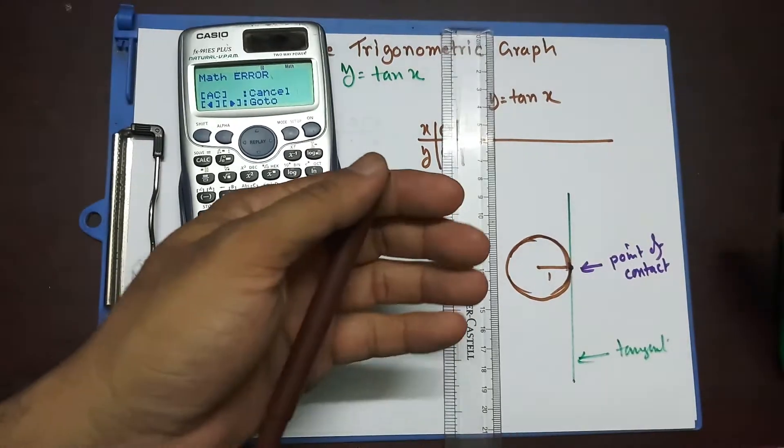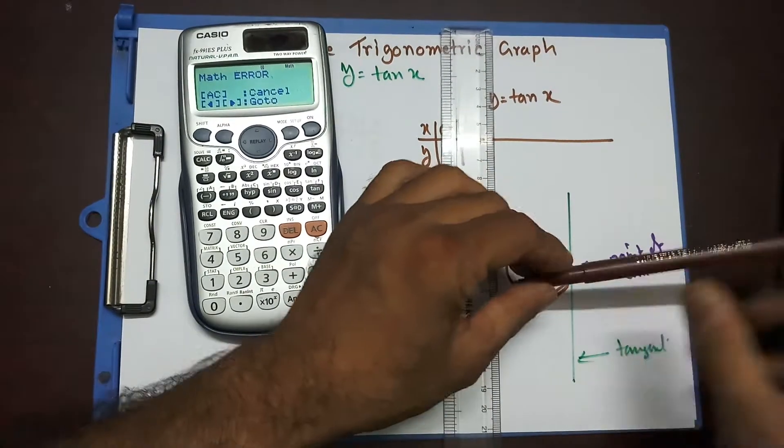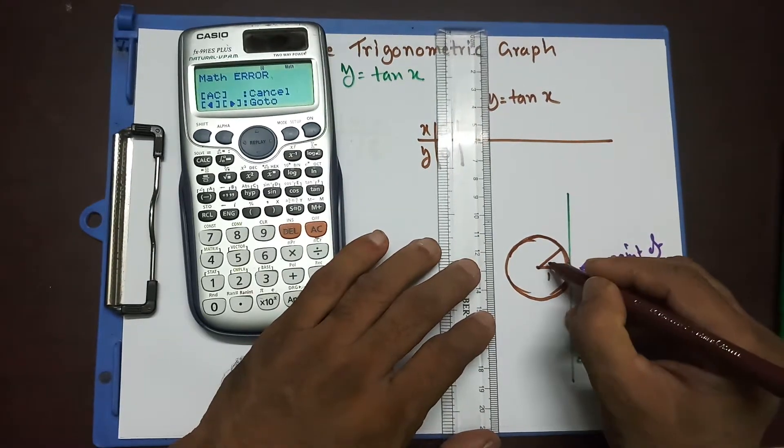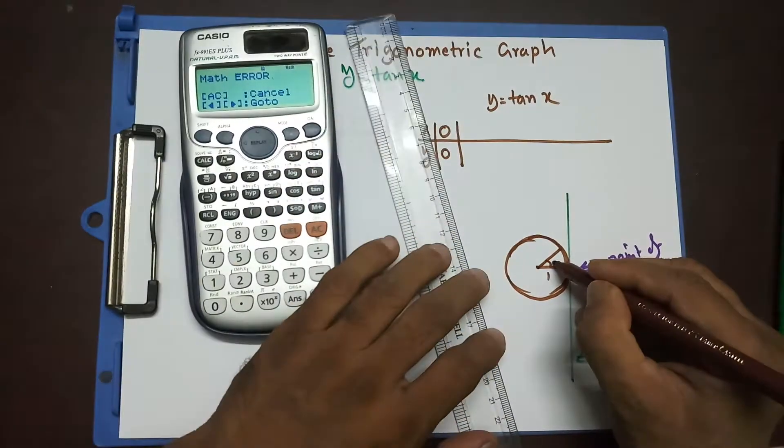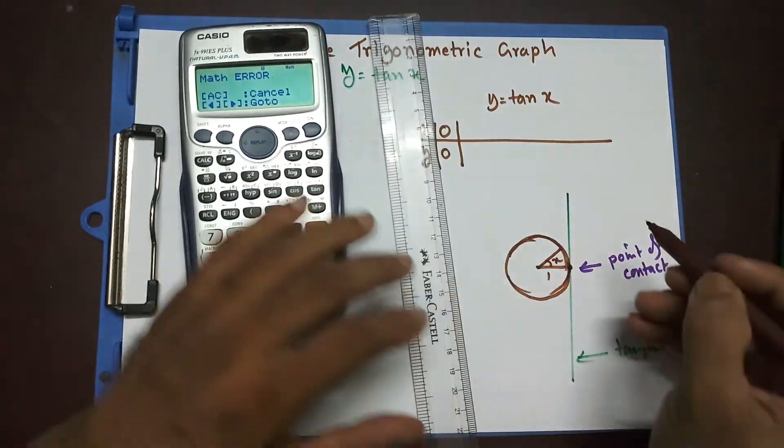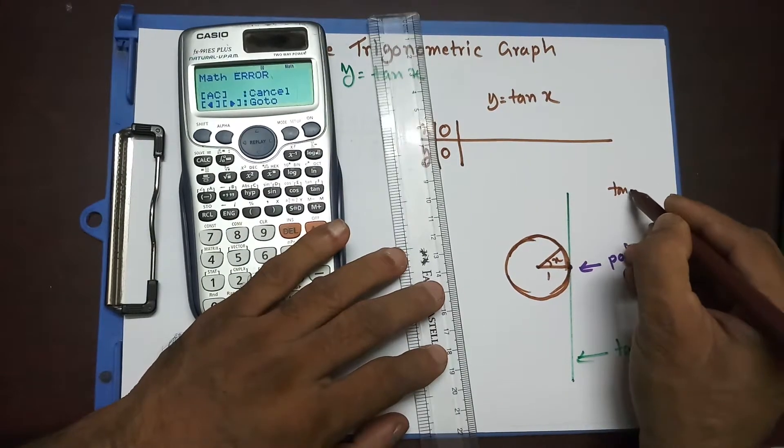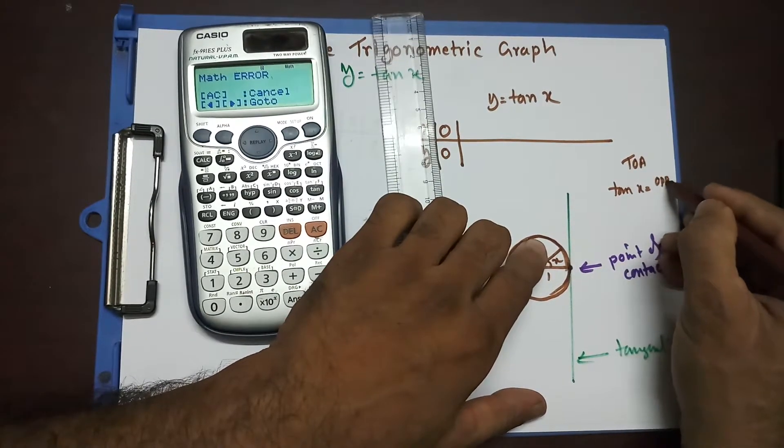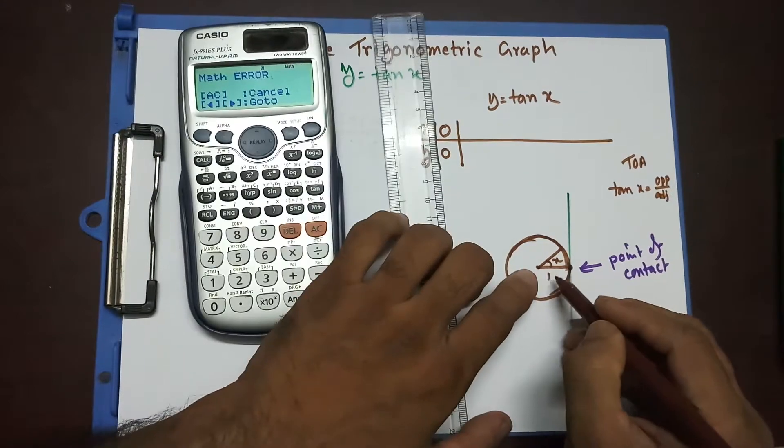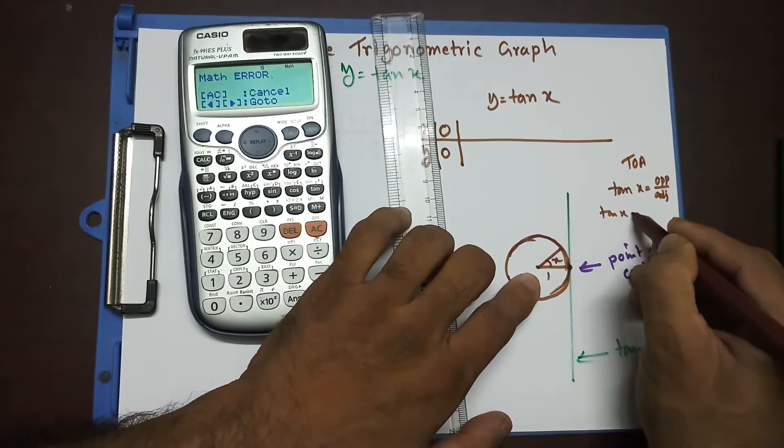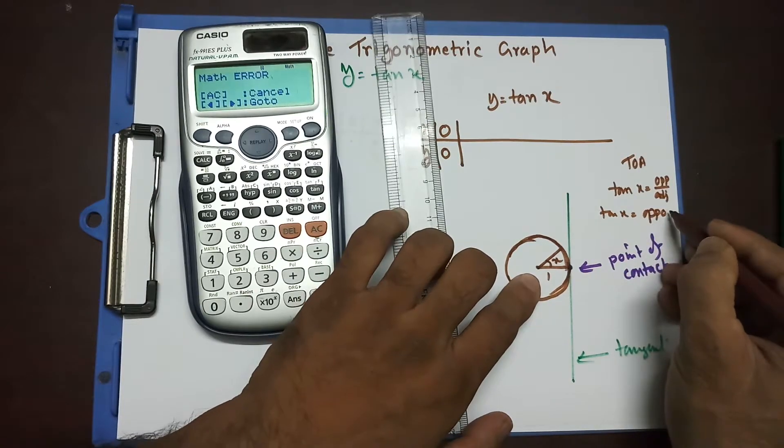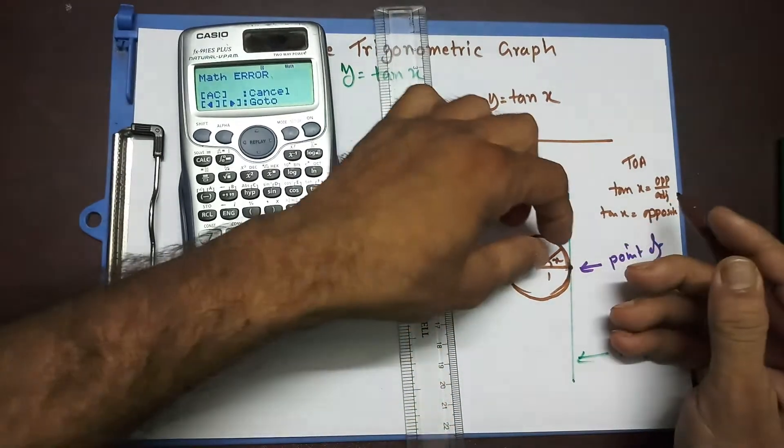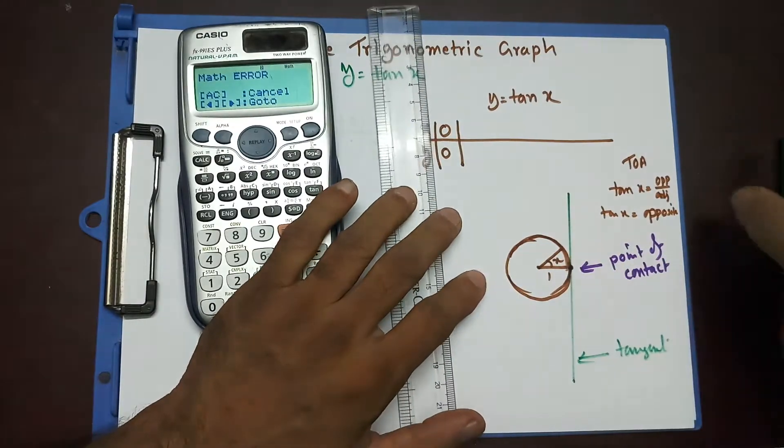Now, this is the tangent line. When this line from the center moves anti-clockwise, let's say it moves up to here, then it creates this angle x. Now, you can see that tan x was opposite over adjacent. So, opposite over adjacent. In this case, adjacent is 1. So, tan x is nothing but the opposite side, that length of this side.